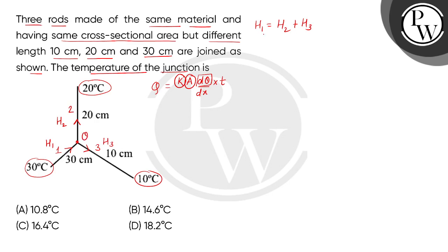तो H1, यानी heat flown through the first rod: H1 = K × A × (30 − θ) / 30 cm × t. This gives us the expression for heat flow through rod 1.